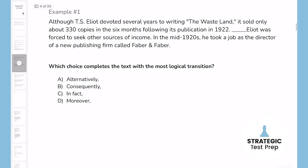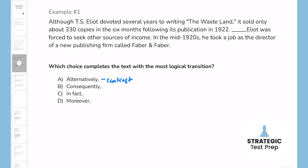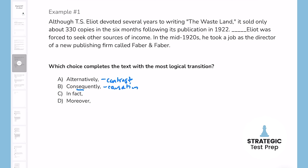On this example, the first thing I'm going to do is categorize the transition answer choices. Alternatively is a contrast — a specific type because it's talking about different options, like 'I'll eat the steak, alternatively I'll eat the chicken.' If you're not sure what category a word goes into, put it in a sentence to help determine what type it is. Consequently is a causation — it has the root SEQ, like a math sequence, one thing happening after another. In fact is a reinforcer and moreover is a support. They're all from different categories, so I can't cross any off.